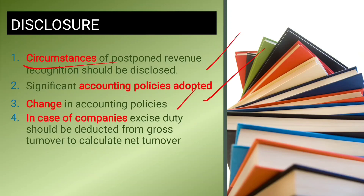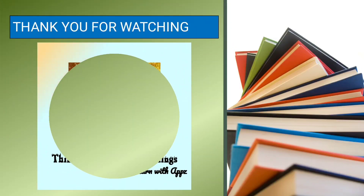In summary, revenue recognition under AS9 covers three types of revenue: sale of goods, rendering of services, and use of enterprise resources yielding interest, royalty, and dividends. For sale of goods, three conditions must be satisfied: transfer of title and control, measurability, and collectability. If collectability or measurability is uncertain, revenue recognition should be postponed. Thank you for watching — I'll see you next time.